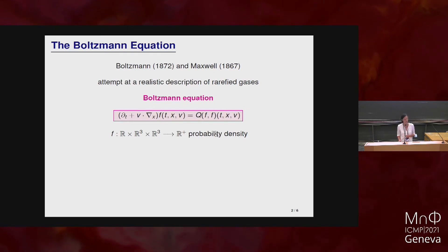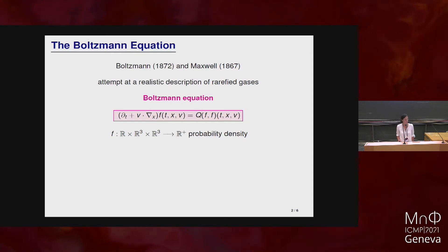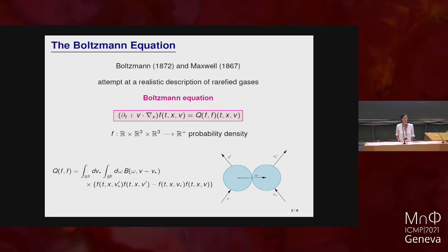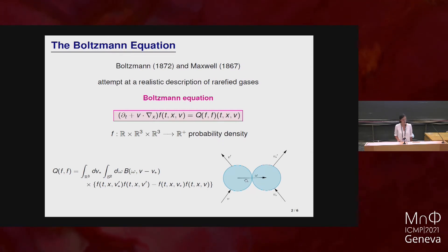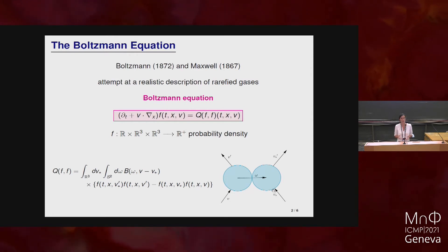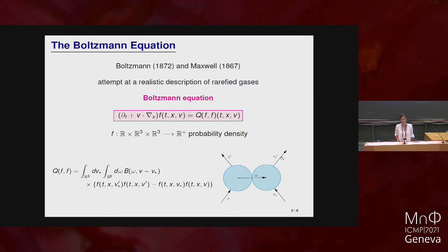Up to certain times, the right-hand side of the equation enters into play. This right-hand side is a nonlinear operator modeling collisions among particles. This operator has an explicit form that might look ugly at first but has a very simple physical meaning: two particles — for example hard spheres — collide and meet before collision with velocities v and v star, then after the collision they change velocities to v prime and v prime star according to scattering rules that preserve momentum and energy.